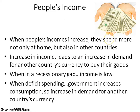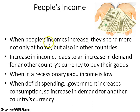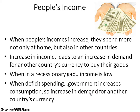Another determinant is people's income. When people's incomes increase, they not only spend more at home — consumption goes up in the AD model — but they also spend more in other countries. So if we have more income, we'll buy more in another country and increase the demand for that country's currency to buy their goods. Conversely, in a recessionary gap, incomes are low, so people will decrease their demand for another country's currency because they won't want to buy elsewhere.